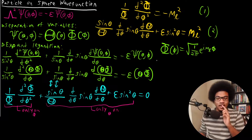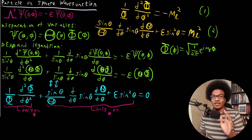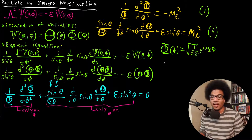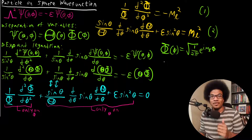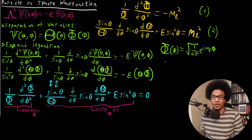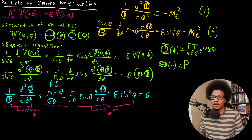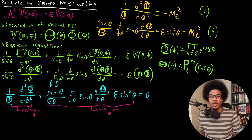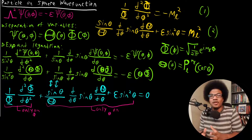The second solution is more complicated — it's not going to be as simple as plugging in a solution we've already solved. The function that depends on theta is going to be solved by a set of solutions called the Legendre polynomials. We use a capital P to denote the Legendre polynomials; they depend on M sub L and L, so two quantum numbers are needed. The Legendre polynomial is a function of cosine theta.